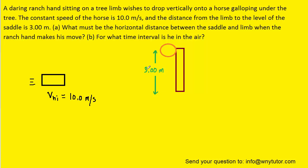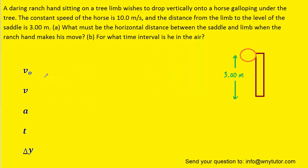And in this case it's going to turn out that we can solve part B before solving part A. It's a little bit easier to work the question that way. So we're going to try to calculate the time that it takes the ranch hand to fall 3 meters. So let's just focus on him and for now we can ignore the horse.